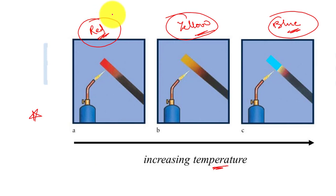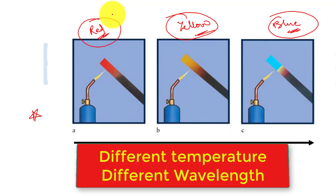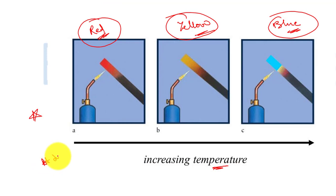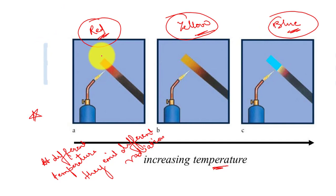By the late 1850s it was established that objects made of different materials emit different radiation at different temperatures. Different radiation means different wavelengths of radiation. As temperature changes, different wavelengths are emitted. The wavelength with the greatest intensity determines the color we observe.